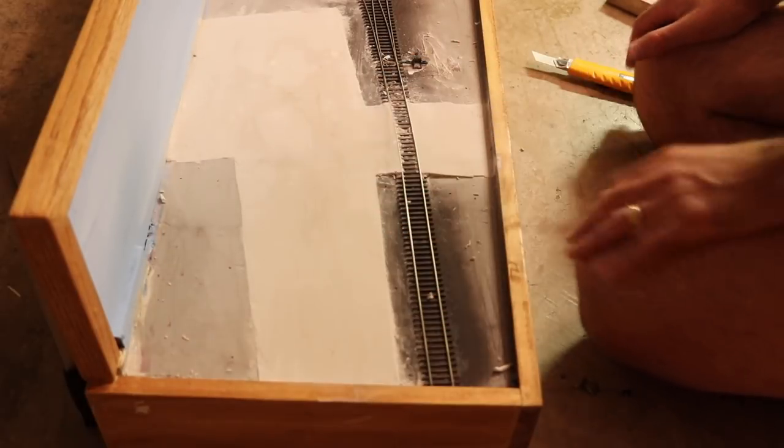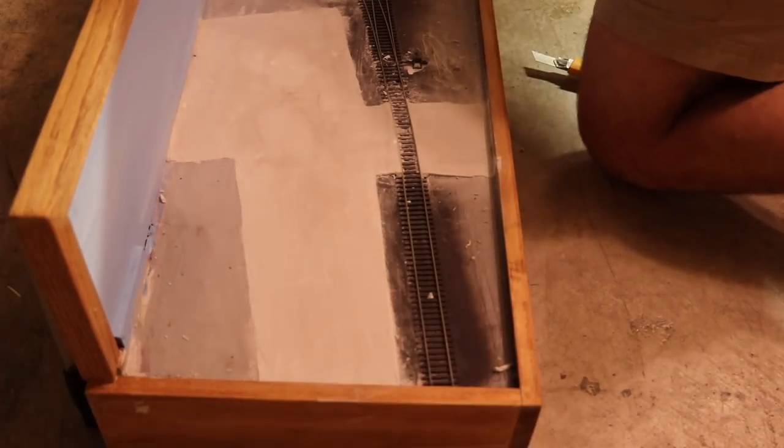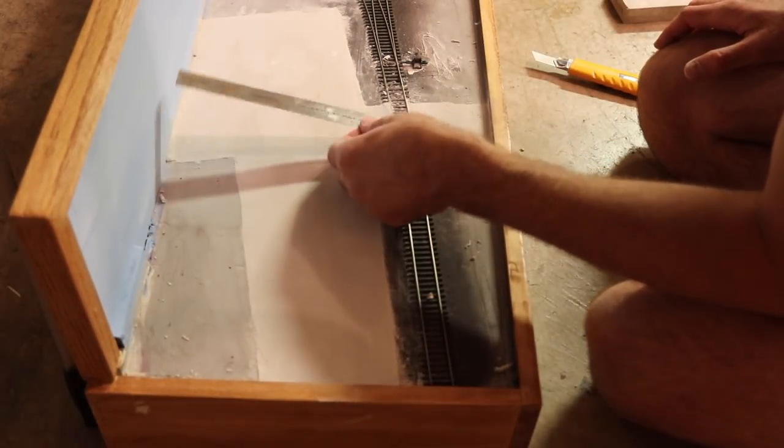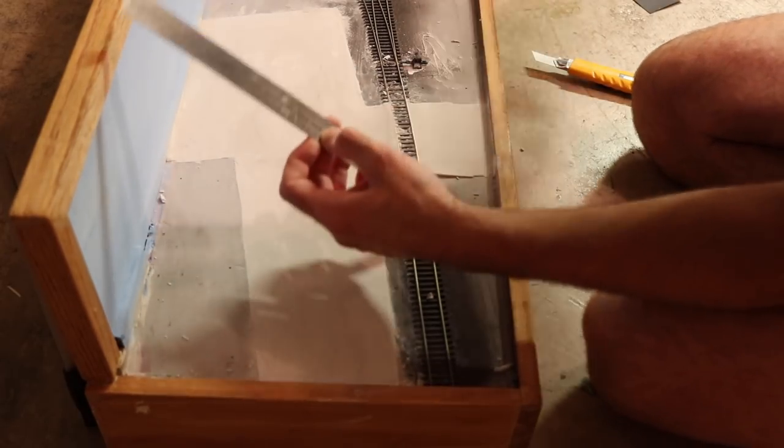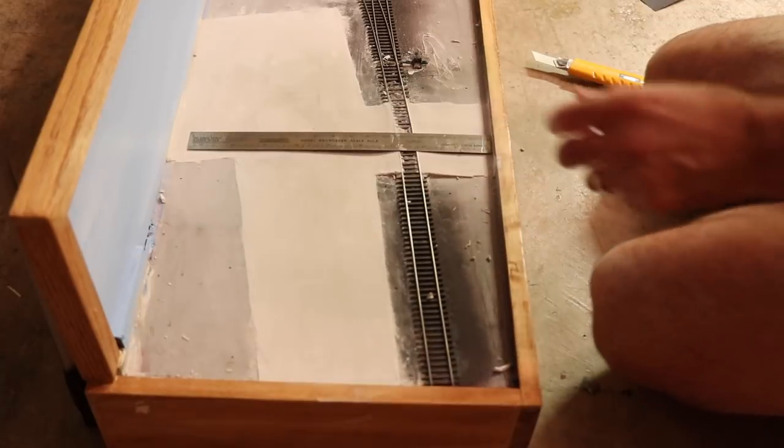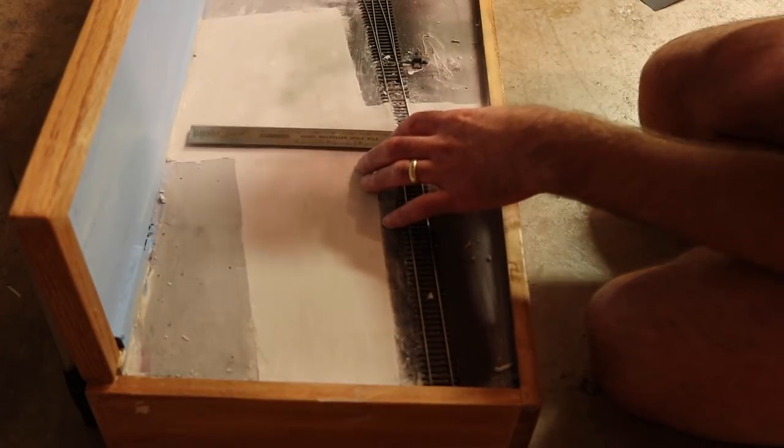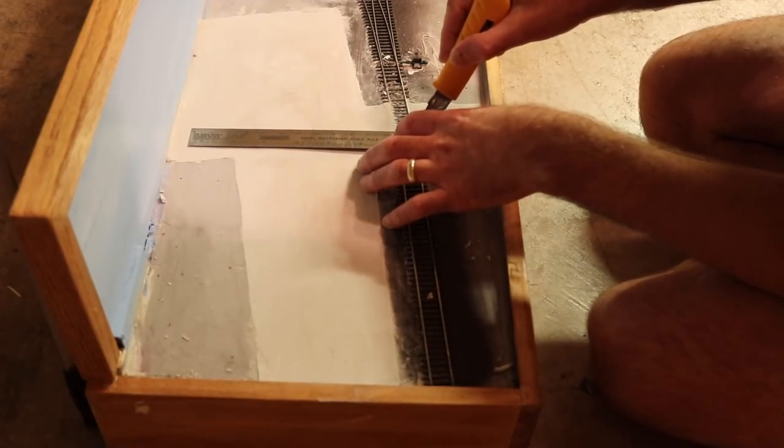I do want this area to represent concrete and so I am going to score some expansion lines through here. I'm not going to be super precise with this in terms of being exactly prototypical in terms of spacing and everything, but I am going to use the back of a knife and just do some score marks.